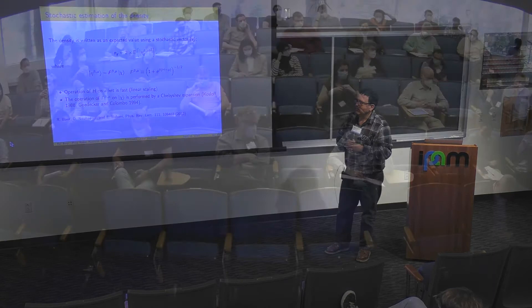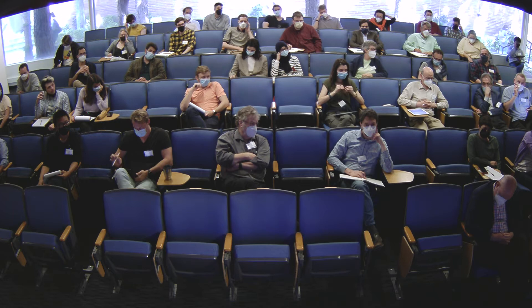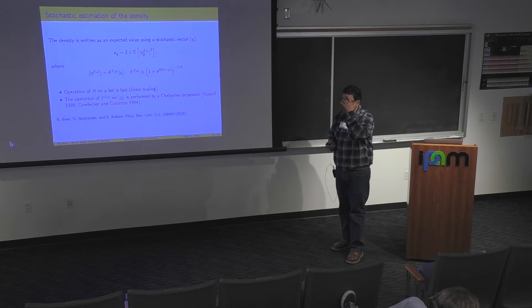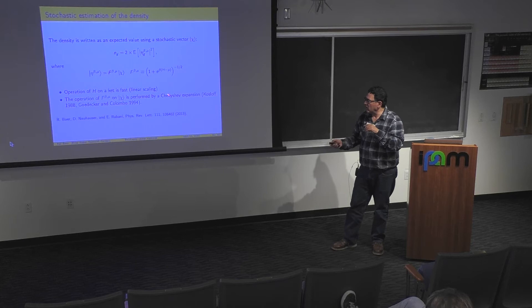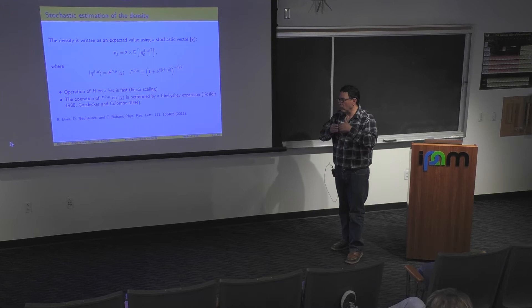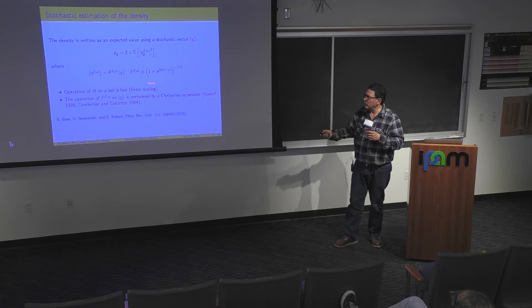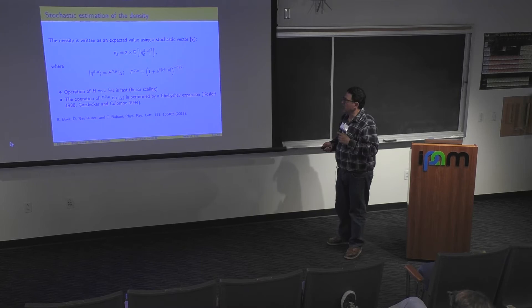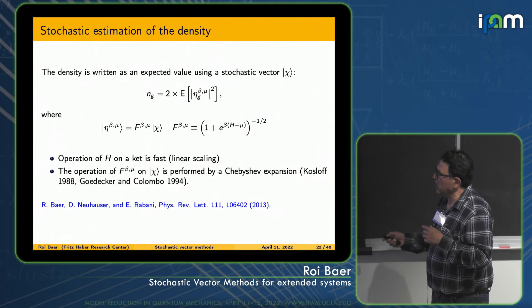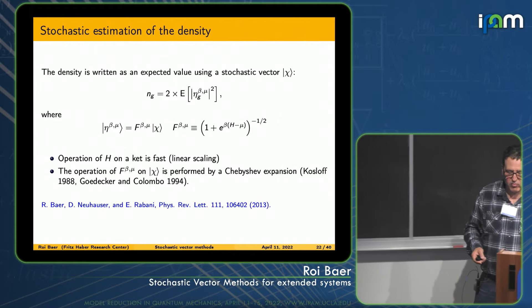An audience member asks about stochastic Lanczos. Lanczos is probably very similar to Chebyshev — the difference is that Lanczos expansion coefficients depend on the initial vector χ, whereas Chebyshev does not depend on χ at all. This means with Chebyshev you can simultaneously perform several expansions at once — for example, calculating not just the density but also the entropy, orbital energy, or any function that depends only on H — very economically.